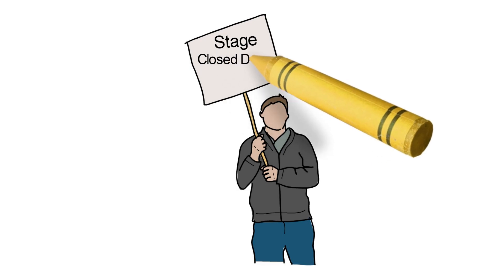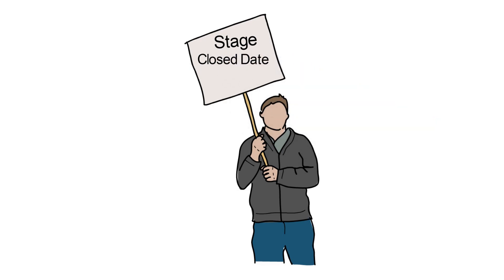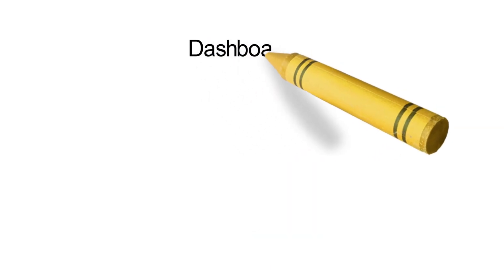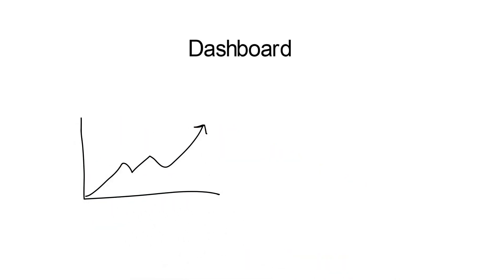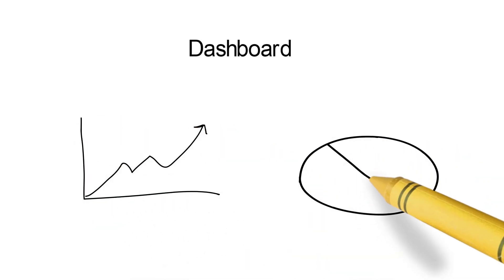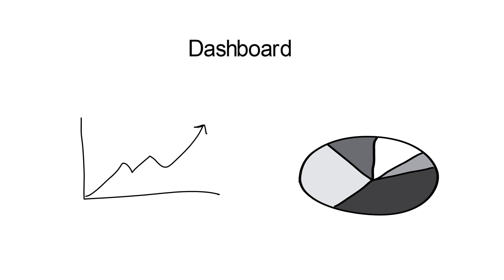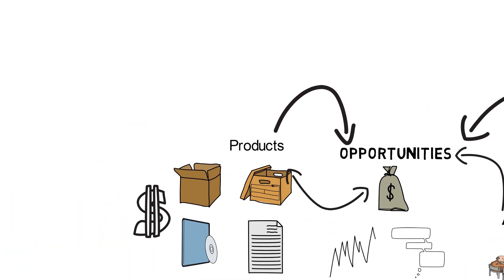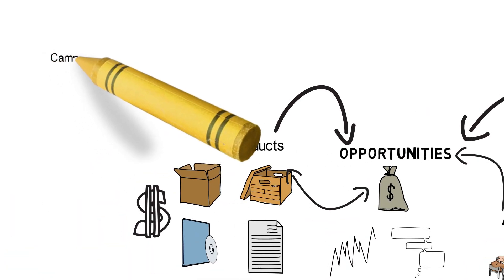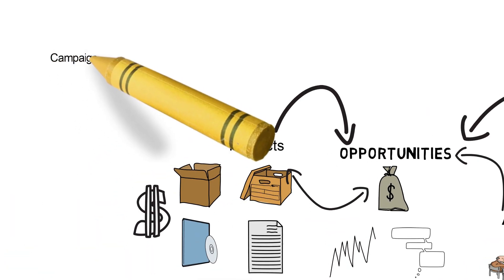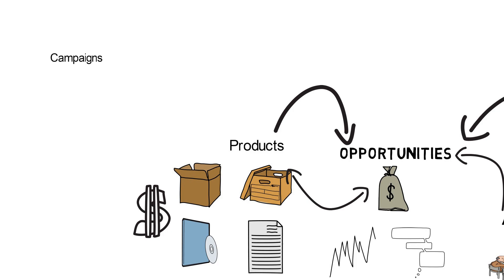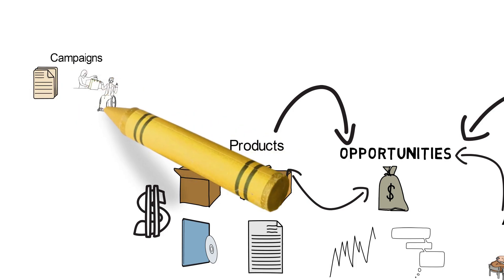With three key pieces of information — Stage, Close Date, and Amount — we can easily analyze our sales pipeline. Dashboards are a powerful way to do this. We can understand the size of our pipeline using dashboards and plan for performance. Campaigns are the marketing activities for our products.